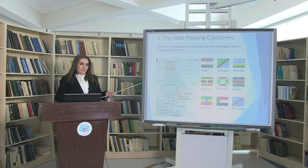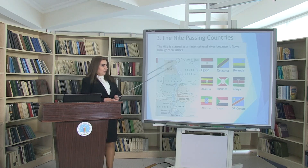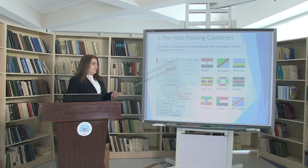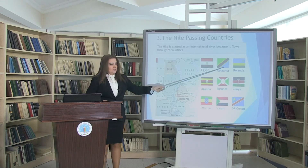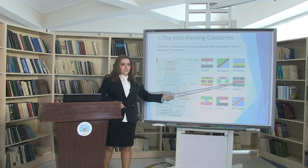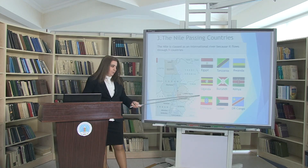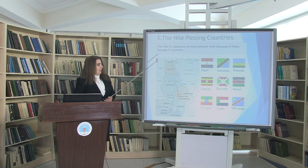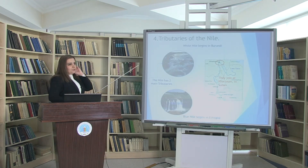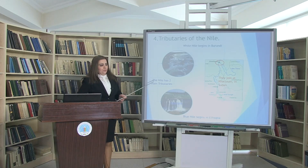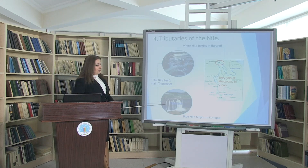I want to show you some countries which the Nile flows through. There are nine countries: first of all Egypt, Tanzania, Rwanda, Uganda, Burundi, Kenya, Ethiopia, Sudan, and the Democratic Republic of Congo.